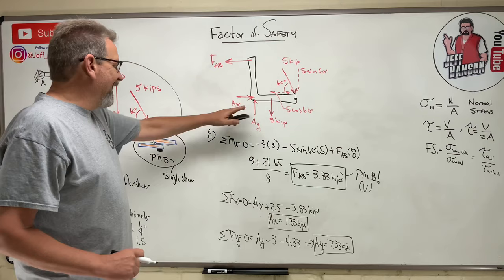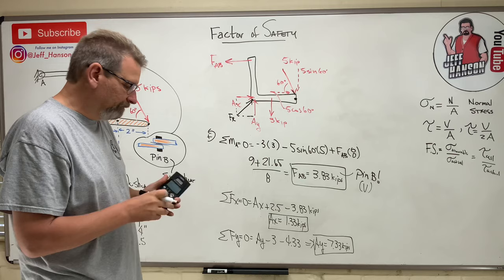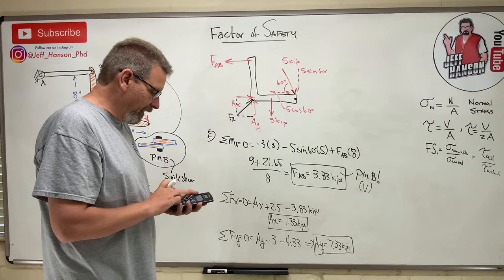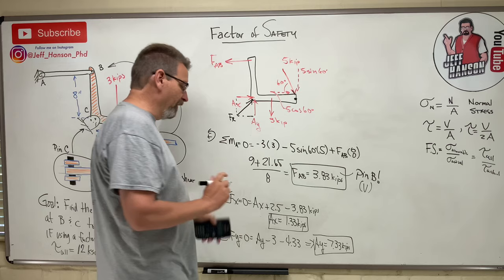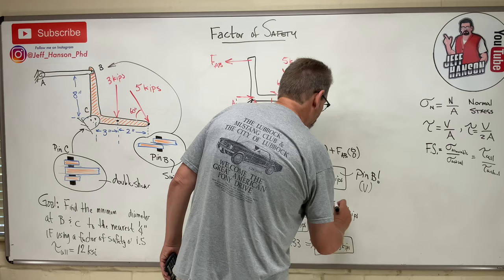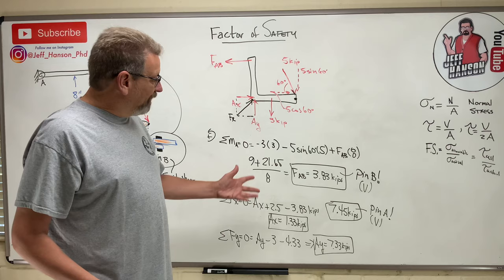The force on pin A is the resultant of both components. We take the square root of 7.33 squared plus 1.33 squared, which equals 7.45 kips. That is the resultant force on pin A. So we've got our forces: pin B is 3.83 kips and pin A is 7.45 kips.